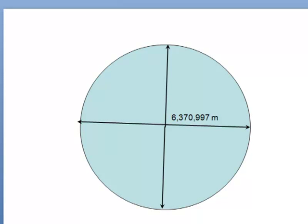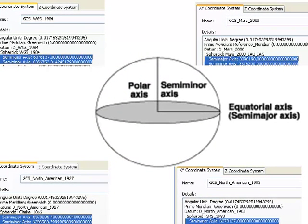It's not quite that simple because the globe is not a perfect sphere. We could approximate it as a sphere with a radius of 6,370,997 meters, but it's actually bulging around the equator due to centrifugal force — making it a spheroid. There are many different ways to approximate the shape of the globe, described in terms of the semi-major axis — the radius from the center of the Earth to the equator.